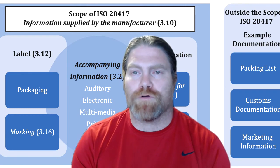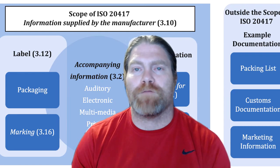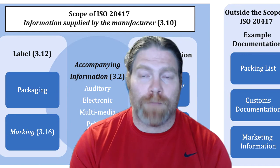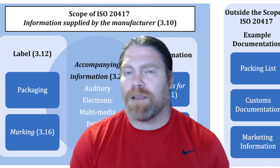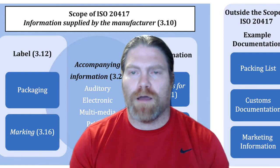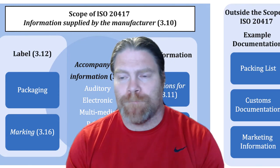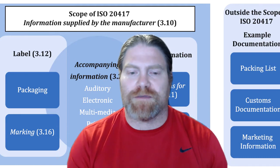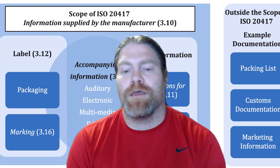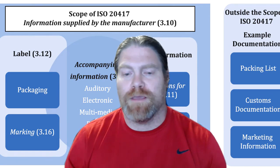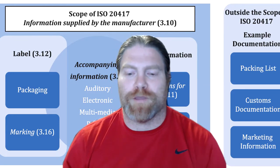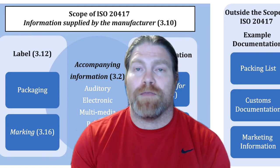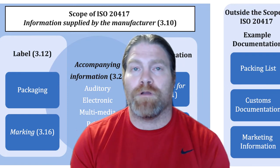Another thing that comes up is in one of the articles for economic operators — specifically the importer — there's a requirement for the importer to apply a label that includes their contact information. It could be applied by the importer or by your company on behalf of the importer. A lot of people have been arguing that it doesn't specifically say you have to apply that information on the label itself, and asking whether you could provide it on the declaration of conformity instead. However, when EN ISO 20417:2021 was released in April of this year, there is a section specifically for the importer that says the importer shall apply a label indicating their contact information. It even references a symbol for the importer: 5.1.8.